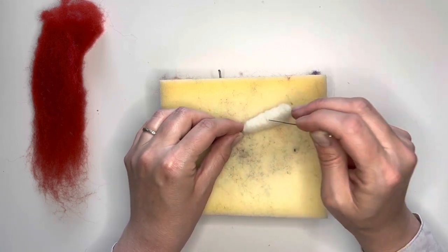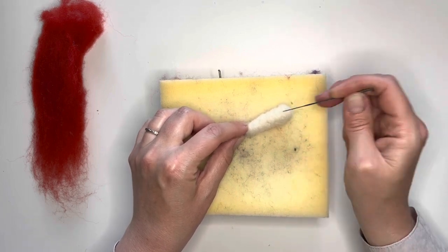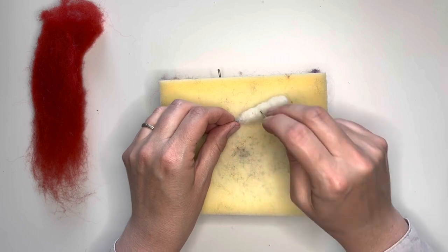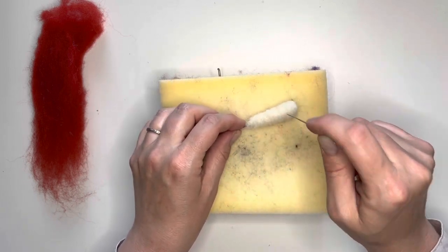And before you know it, we are going to be adding a little bit of our mushroom color to our stem. Now you want to do short shallow pokes, don't poke too deep.